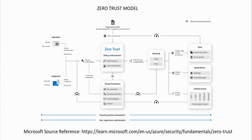The logic here is to verify explicitly — always authenticate and give authorization based on whoever the user or device is. The other principle is to always operate off the principle of least privilege. In Azure, we should always give out the least amount of rights that someone needs to do their job.